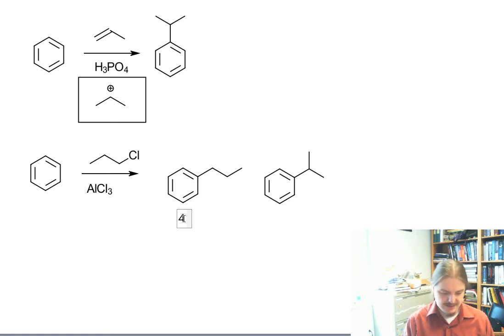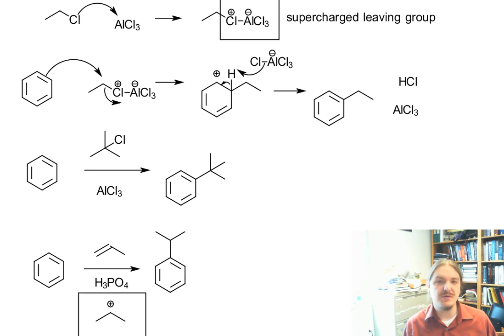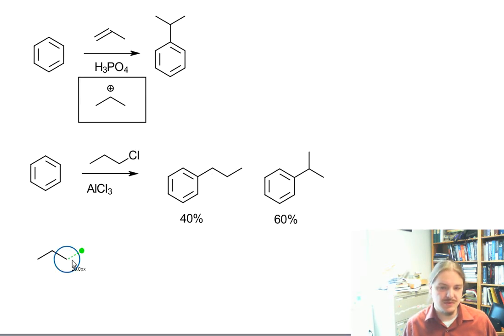And in fact, the rearrangement is pretty highly likely. And so in a reaction of chloropropane with benzene and aluminum chloride, you get a significant amount of isopropylbenzene.